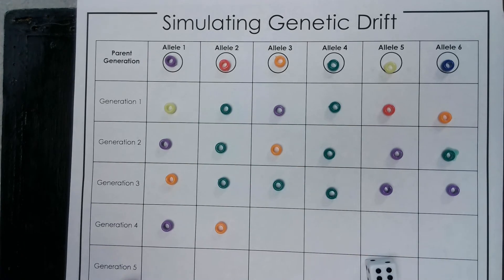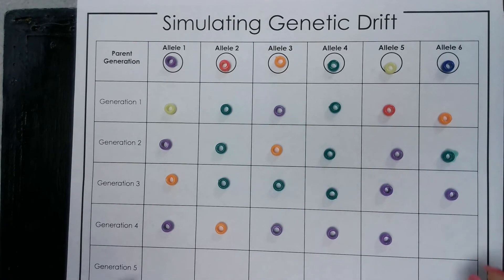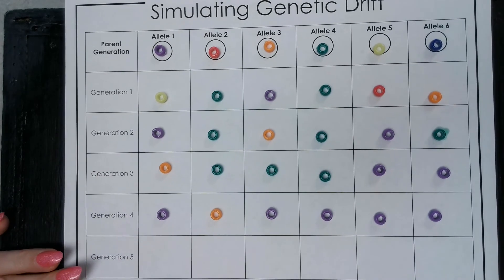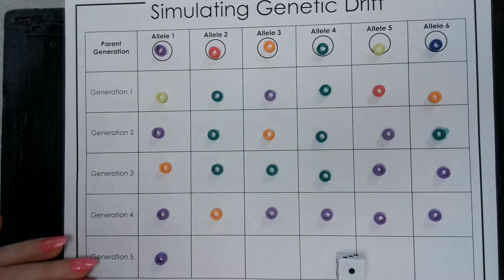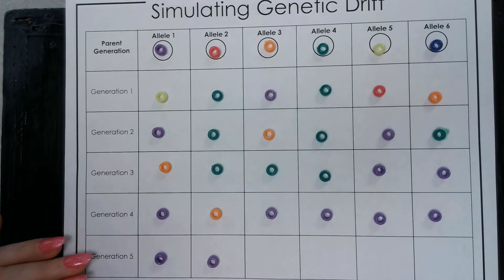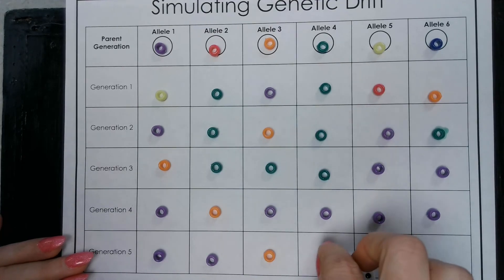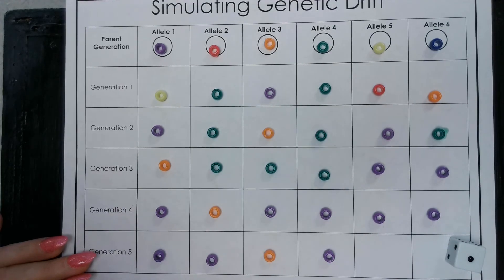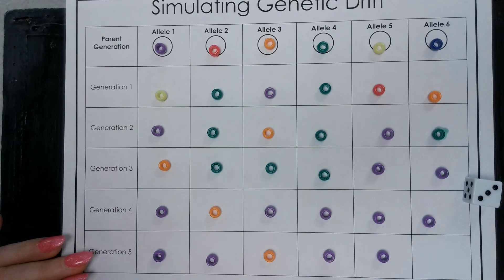I'm just going to go through this so you can get the data. We got another purple bead. Five is another purple bead. Six is a purple bead. Another six — purple. Let's go for our final generation, generation five. I just rolled a three — that's a purple bead. Then a one — that's going to be a purple bead. A two — that's an orange bead. A four — that's going to be a purple bead. Just rolled a one — that is a purple bead. And then my final is a three — that's going to be a purple bead.